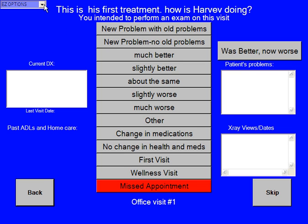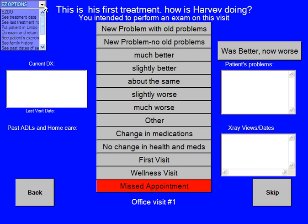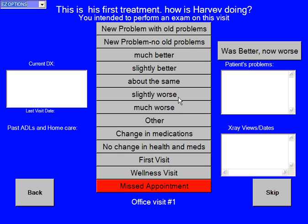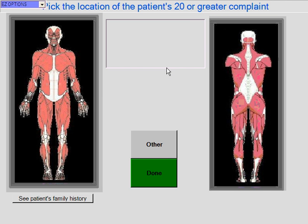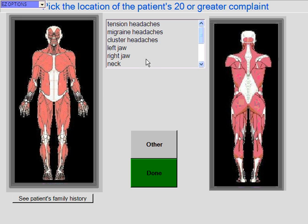At any time I can touch the easy options button and see all different types of data about this patient — see just his treatment data, see his last treatment note, put the patient in limbo, or do an exam and return. But we're going to select slightly better. Now it says pick the location of the patient's 20 or greater complaints. We're going to touch his neck. By touching anywhere on these figures, it automatically brings up a list of things I can choose. So I'm going to say neck.